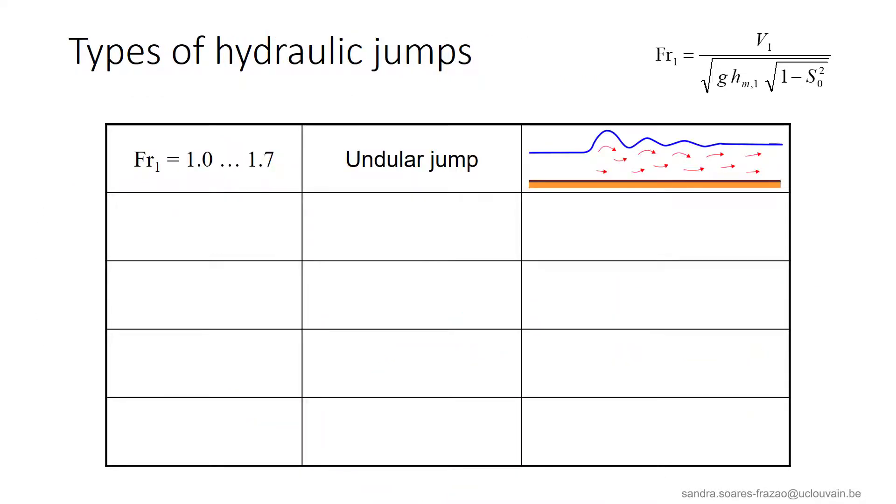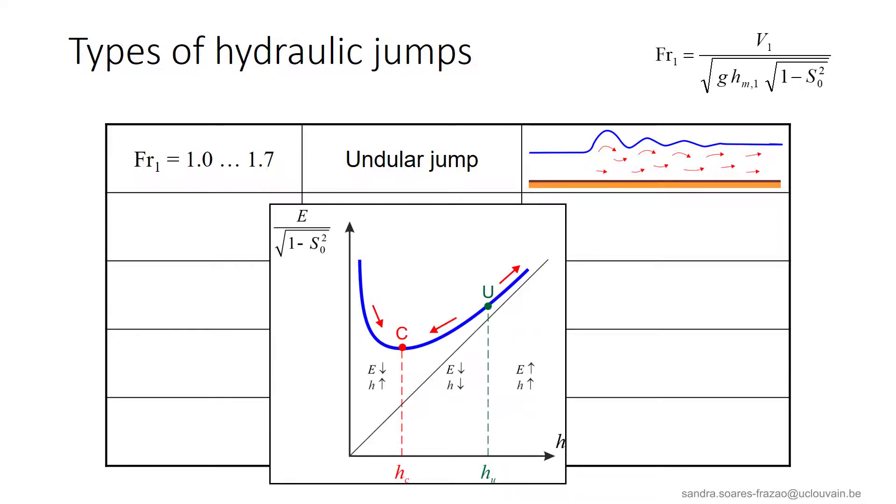So the incoming Froude number is also used to classify the different types of hydraulic jumps. For Froude numbers close to 1, we have an undular jump that presents undulations of the free surface. Such a flow is close to the critical conditions, and we have seen that critical flows are usually unstable, as near the critical depth, the specific energy does not vary much in comparison with the water depth. This explains the oscillations of the free surface around the critical depth.